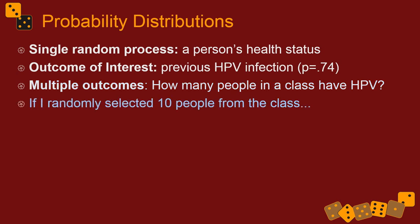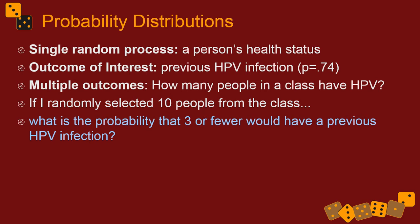What if we narrow this down and say we have a randomly selected sample of 10 people from a particular class? What is the probability that three or fewer of them would have a previous HPV infection? Maybe we sampled 10 people from a class who volunteered for a study on HPV, and we only found evidence of a previous infection in three of them. That would be interesting — what's the likelihood of that result happening for us?